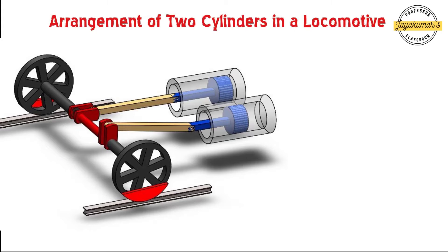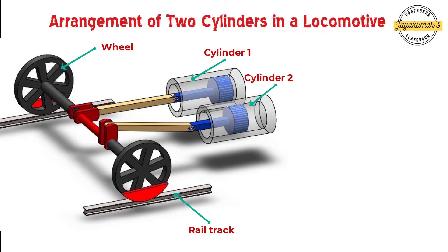This 3D isometric view helps us understand the arrangement of two cylinders in a locomotive. The locomotive has two driving wheels, two cylinders — cylinder 1 and cylinder 2 — of the same dimensions, identical in nature, each having a piston, piston rod, connecting rod, and associated cranks.